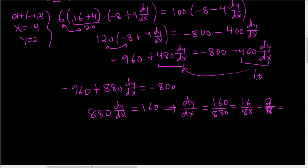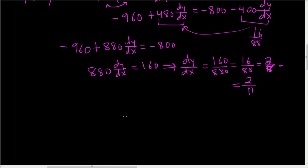Let's see, 16 over 88. So 8 goes into 16 twice. Yeah, that's right. 2 and then, yeah, 11. So 2 over 11, that's correct. All right, so dy dx. So dy dx at the point negative 4 comma 2 is equal to 2 over 11.